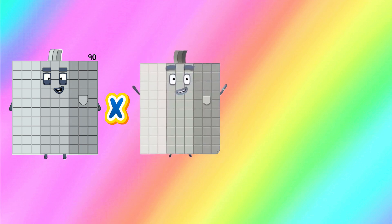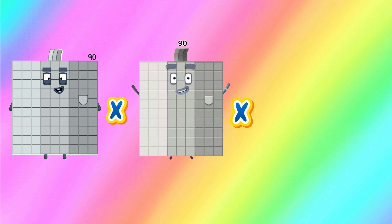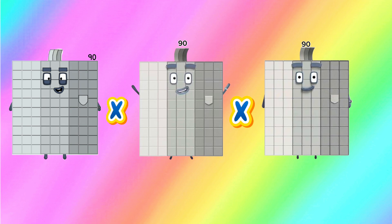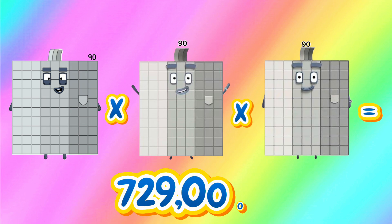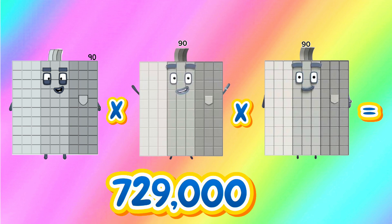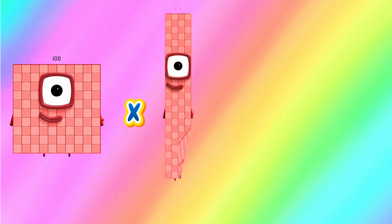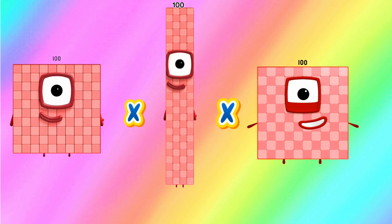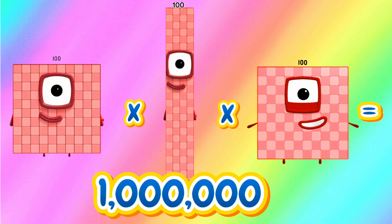90 times 90 times 90 is equals to 729,000. 100 times 100 times 100 is equals to 1,000,000.